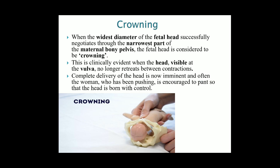When the widest diameter of the fetal head successfully negotiates through the narrowest part of the maternal bony pelvis, the fetal head is considered to be crowning. This is clinically evident when the head is visible at the vulva and no longer retreats between contractions. Complete delivery of the head is now imminent and often the woman who has been pushing is encouraged to pant so that the head is born with control.